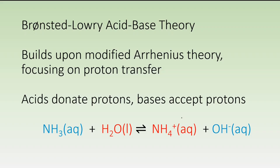This video covers the Bronsted-Lowry acid-base theory, which builds upon our previous theory, modified Arrhenius. Through a certain lens, we can see how modified Arrhenius points to us that proton transfer was going on. If we understand Bronsted-Lowry theory as being the movement of a charged particle, which in this case is a proton, then acids act like proton donors and bases act like proton acceptors.